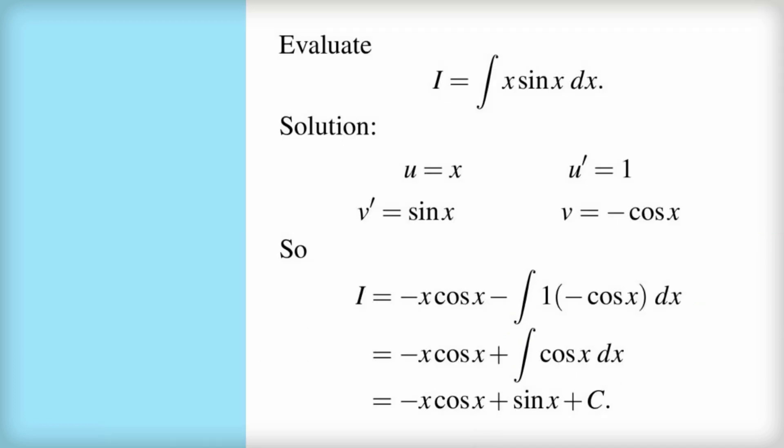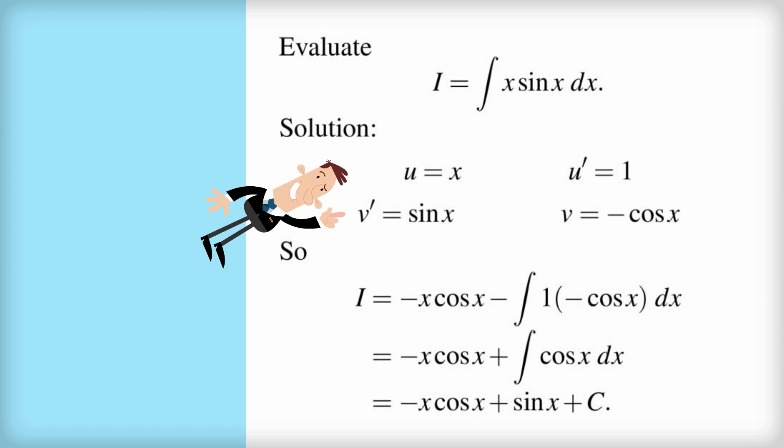So to do the solution, I always set things out exactly the same. That minimizes the risk of error in any exam or test that I'm going to do. So I write out u equals x because I want to take the derivative of x. And then on the right here, I put u dash, which is the derivative of u, is equal to 1. Then I write down v dash equals sine x, which means that v is the integral of sine x, which is negative cos x.